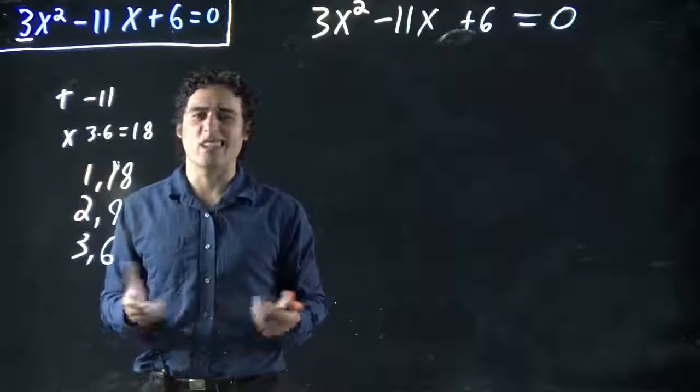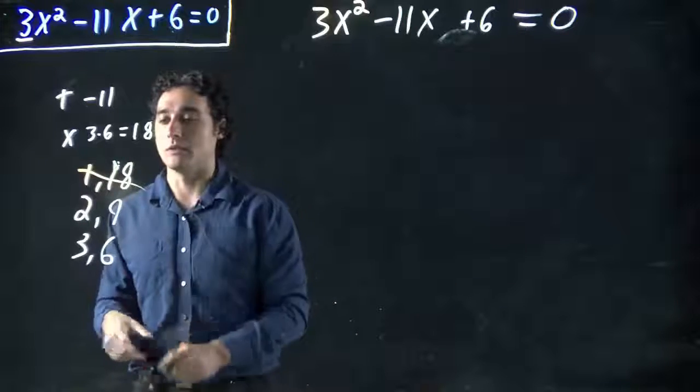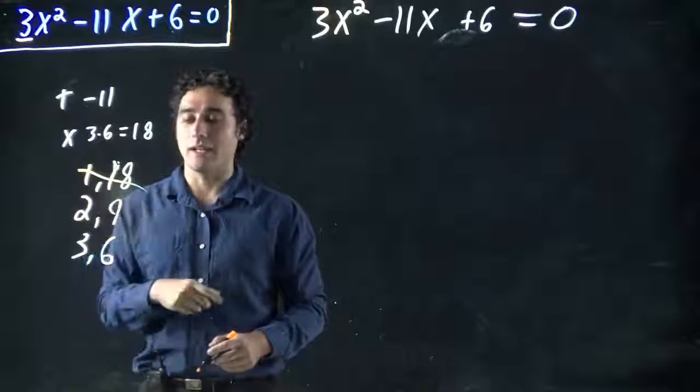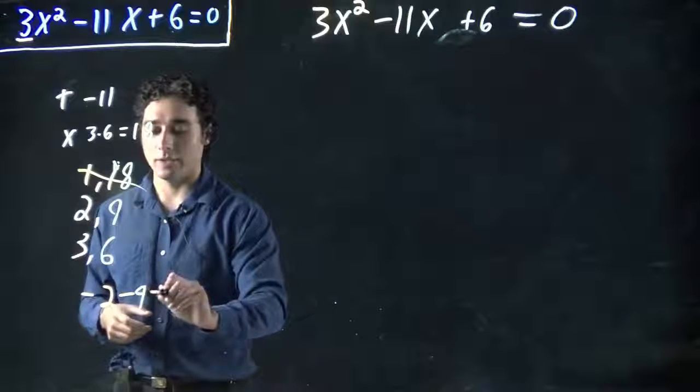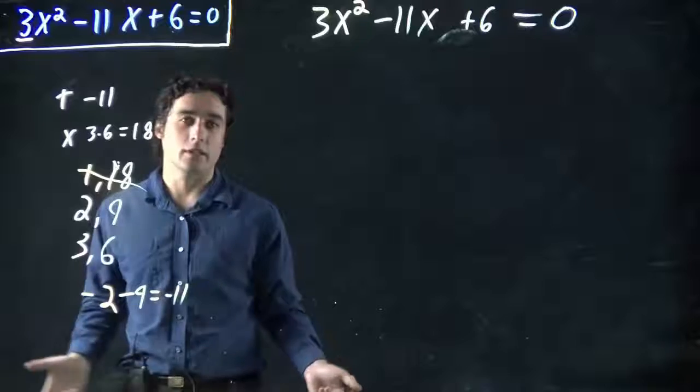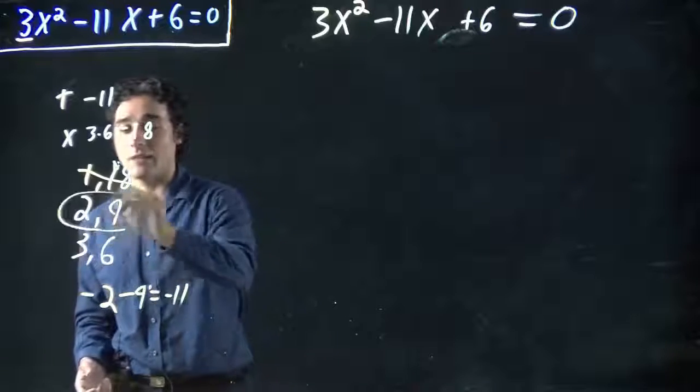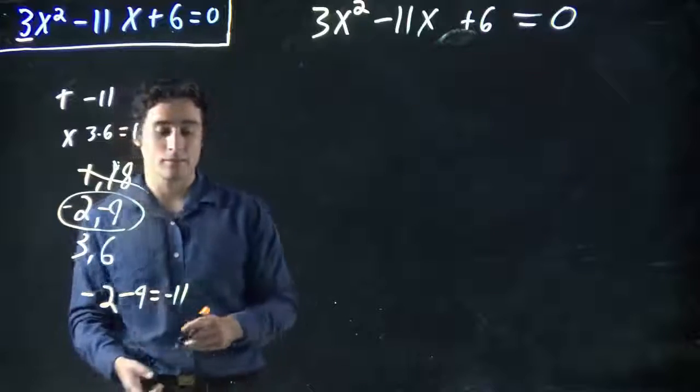Minus 1 and minus 18 gives minus 19, no. Minus 2, minus 9? Wait, minus 2, minus 9 equals minus 11. Perfect, we're in business. That must be the case where both of these are minus.